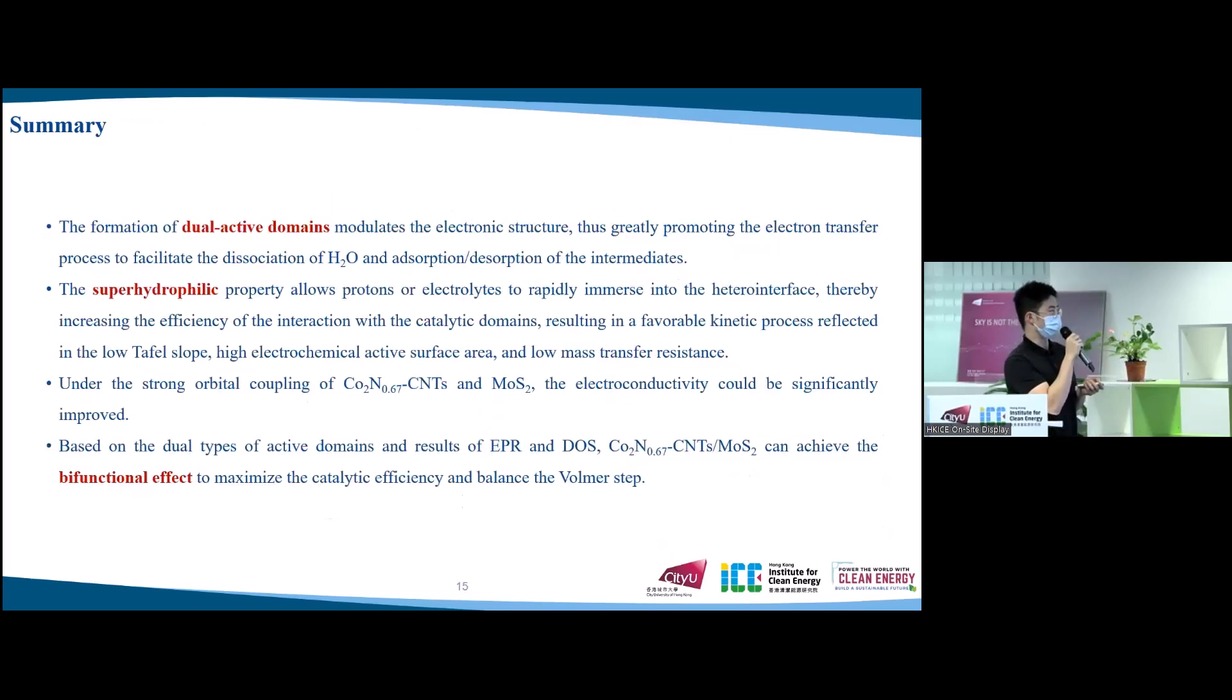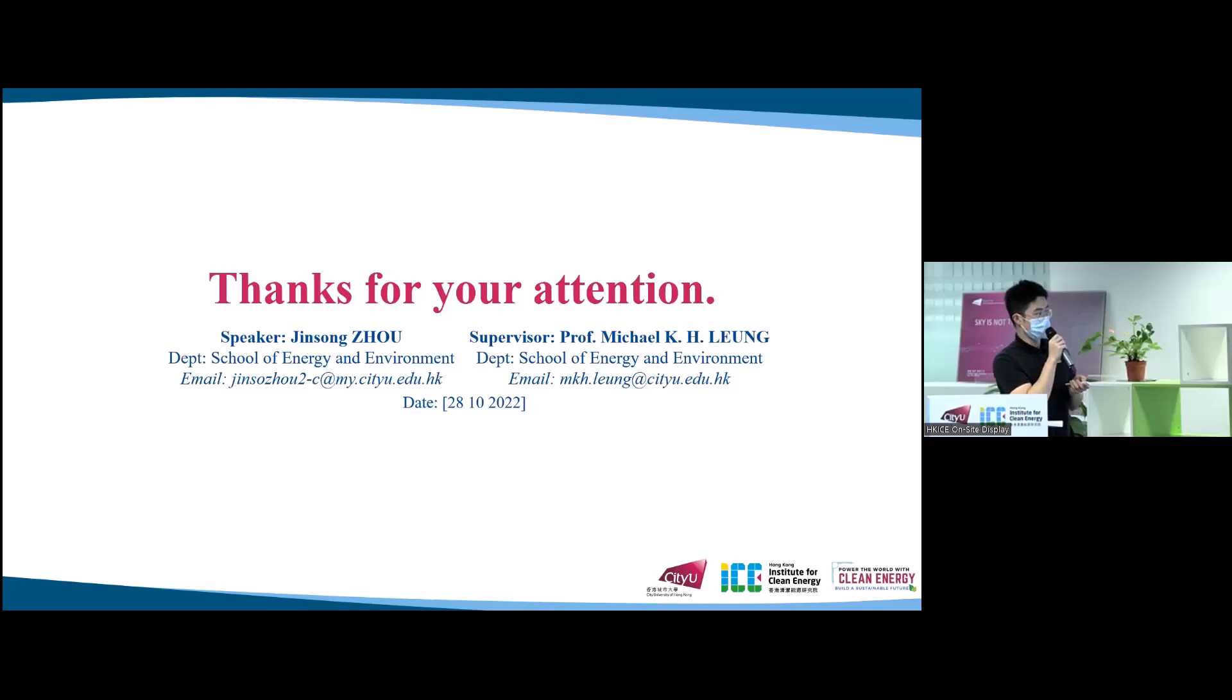In summary, the formation of dual-active domains modulates the electronic structure that greatly promotes the electron transfer process to facilitate the dissociation of water and adsorption-desorption of intermediates. The superhydrophilic property allows protons or electrolytes to rapidly immerse into the hetero interface, thereby increasing the efficiency of the interaction with the catalytic domains. Under the strong orbital coupling of the cobalt nitride-CNT and molybdenum disulfide, the electrical conductivity could be significantly improved. Finally, based on the dual types of active domains and the results of EPR and DFT, cobalt nitride-CNT at MoS2 can achieve the bifunctional effect to maximize the catalytic efficiency and balance the Volmer step. That's all for my today's seminar. Thanks for your attention.